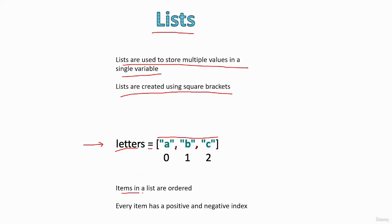Items in the list are ordered, so every item in a list has a positive index and a negative index. In the positive indexing system, the first item of the list has index zero, the second item has index one, and the third item has index two, and so on. In the negative indexing system, the last element has negative one, the second to last has negative two, the next has negative three, and so on.